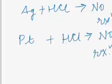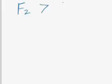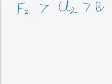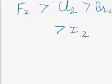It is also possible that a non-metal displaces another non-metal. In such cases a more electronegative element displaces a less electronegative element. For example, in group 17 of the periodic table the order of decreasing electronegativity is: Fluorine, then Chlorine, then Bromine, then Iodine. So Fluorine can displace Chlorine, Chlorine can displace Bromine, and Bromine can displace Iodine.